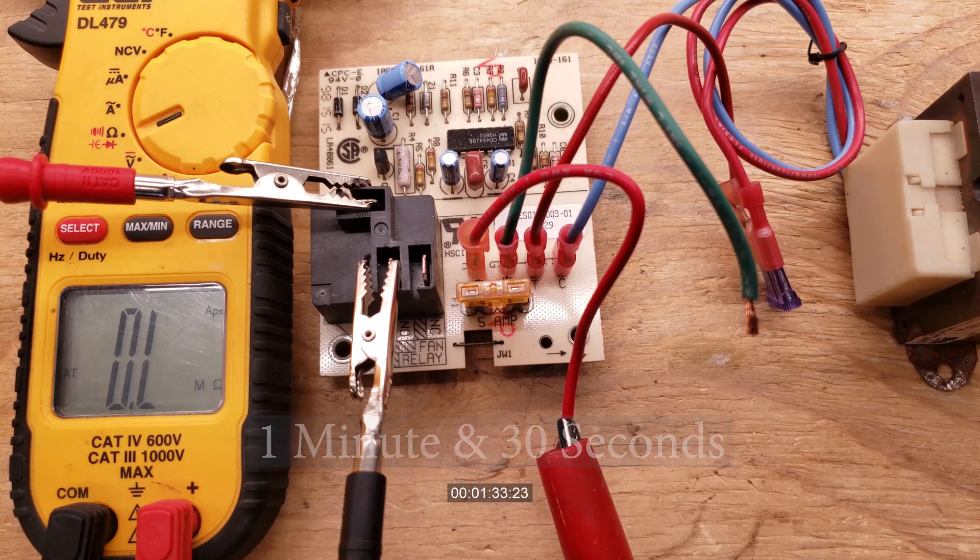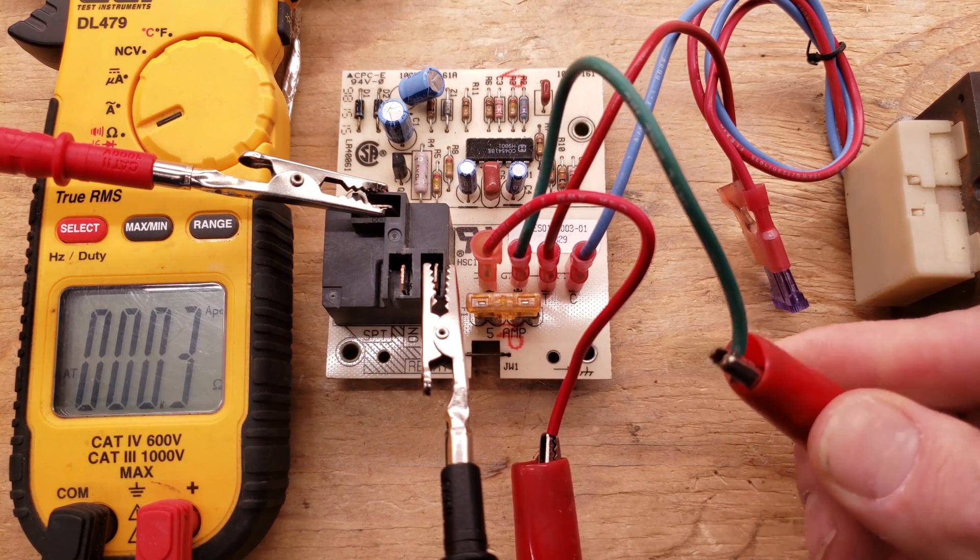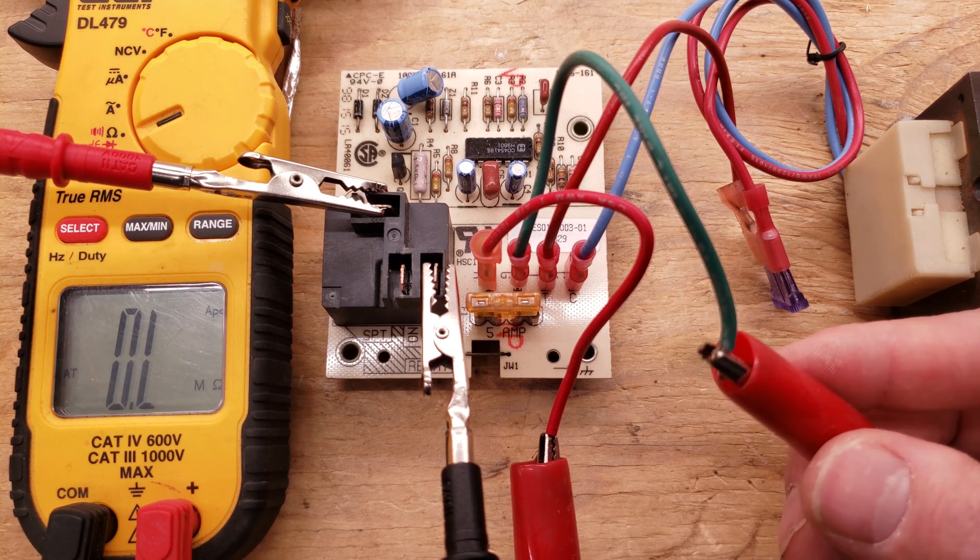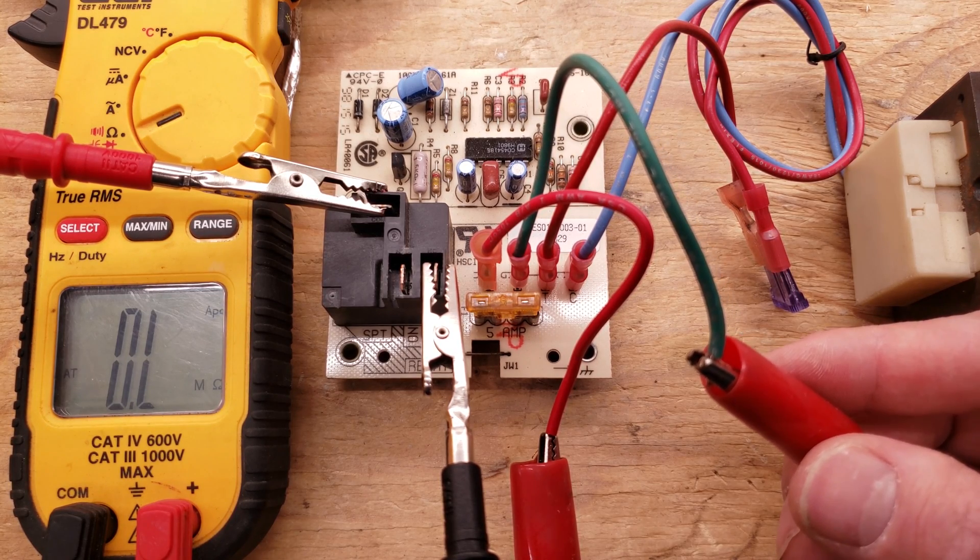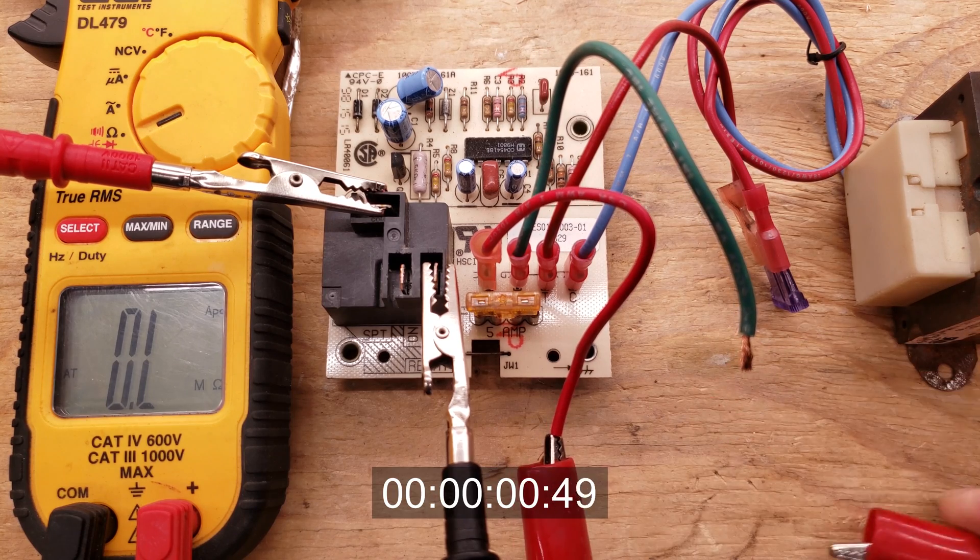So there we go. Now we're going to go ahead and test our NC terminal. You can see that it just switched immediately right after about one second. Some control boards may take a few seconds to do this, but this one is doing it immediately. Now we're going to go ahead and disconnect this.